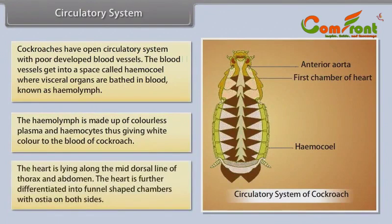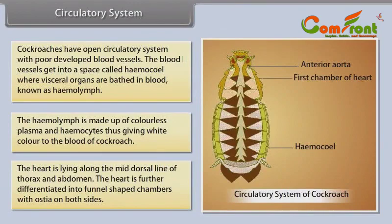The heart lies along the mid-dorsal line of the thorax and abdomen. The heart is further differentiated into funnel-shaped chambers with ostia on both sides.